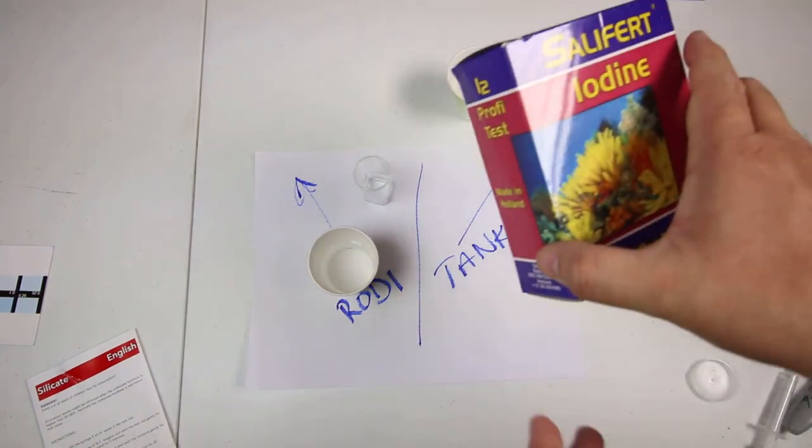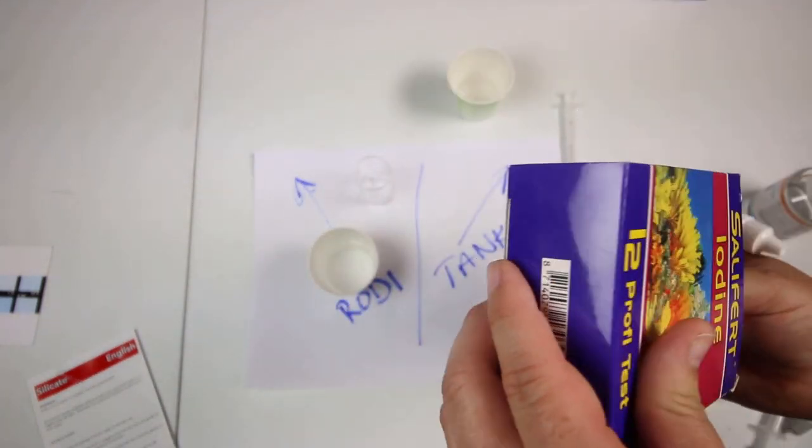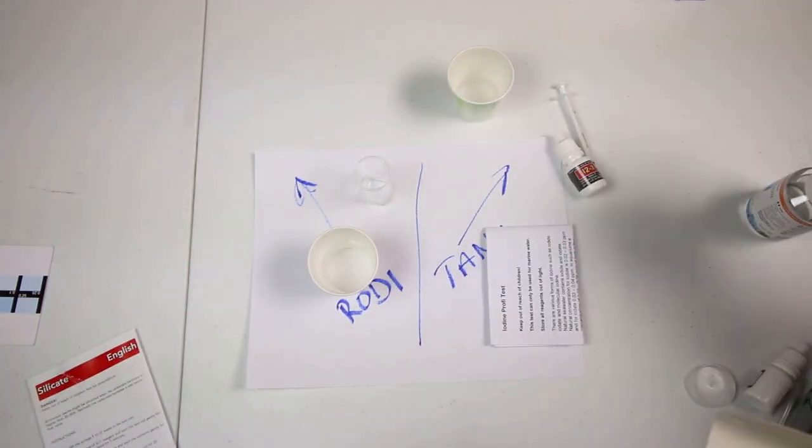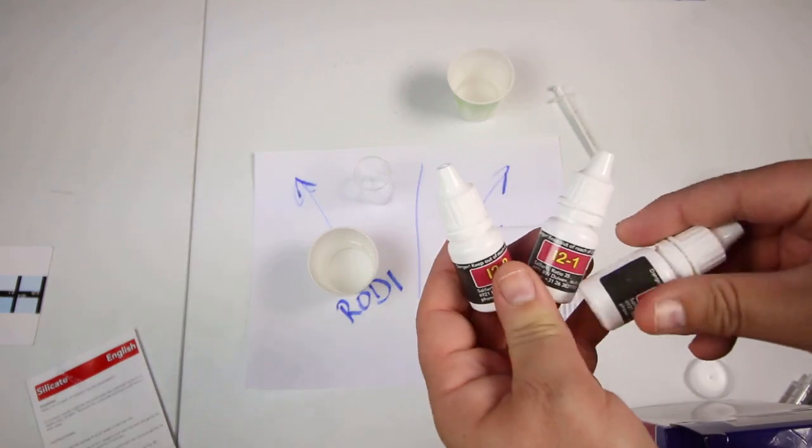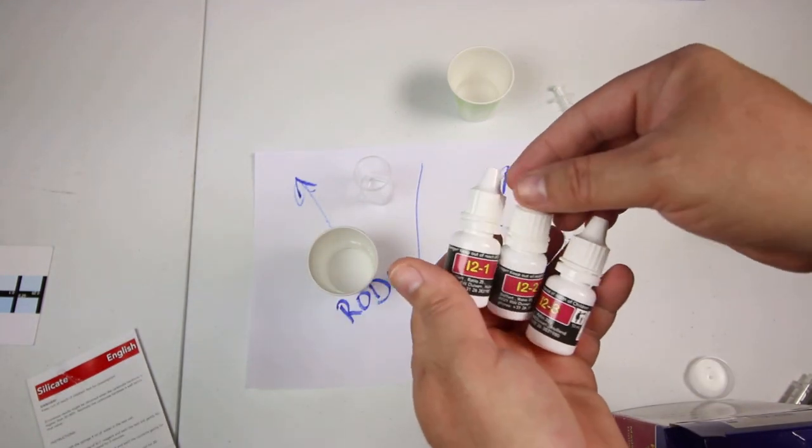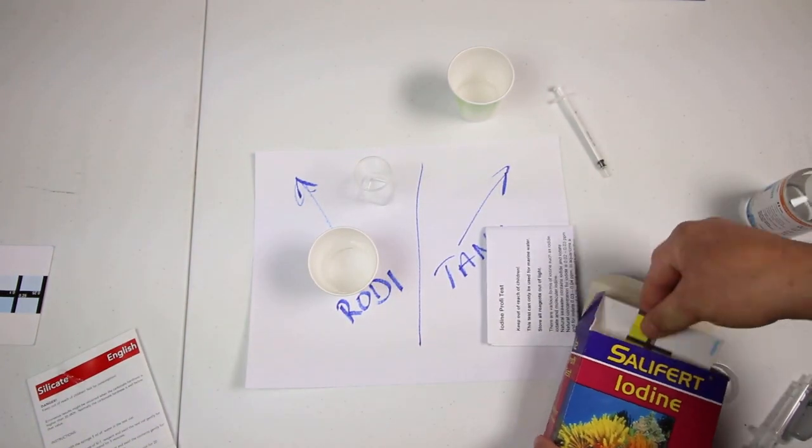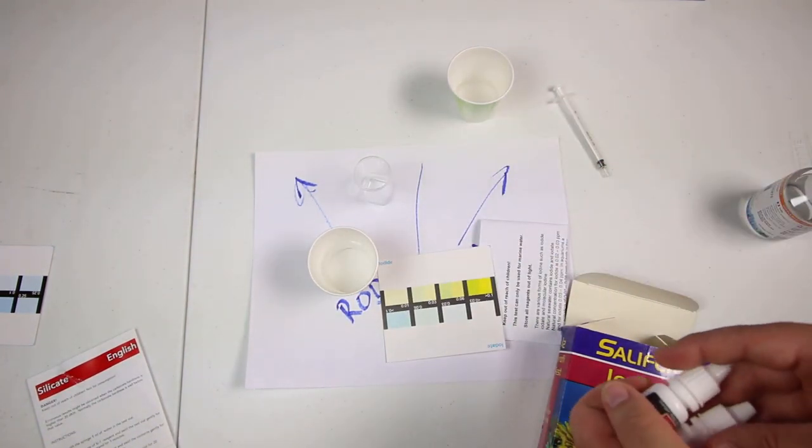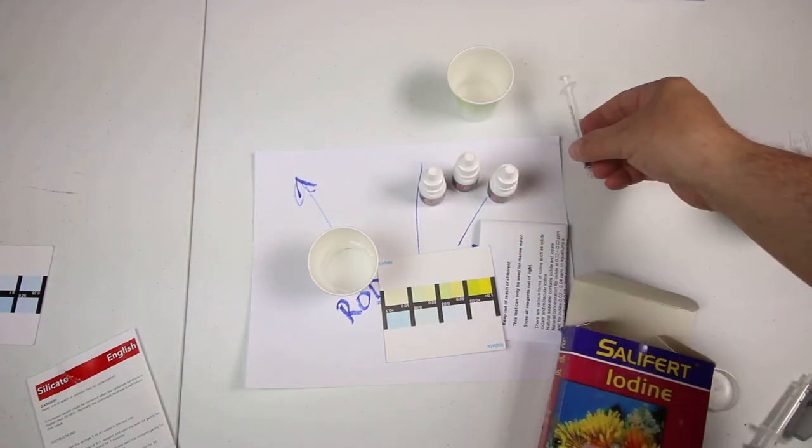Next let's take a look real quick at the iodine. Iodine can be very beneficial for corals, especially for zoanthids. Iodine has been known to be very beneficial for them. So we got I2, 1, 2, and 3, our instructions and then of course our color chart. So let me go ahead and rinse out and we will go ahead and test this.